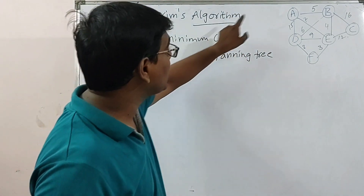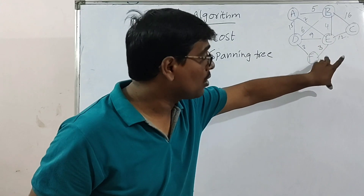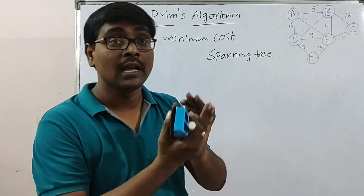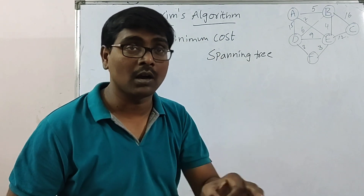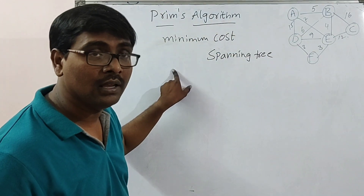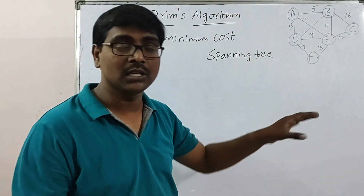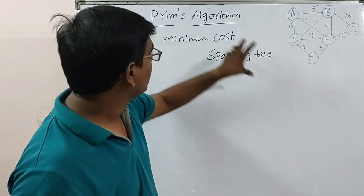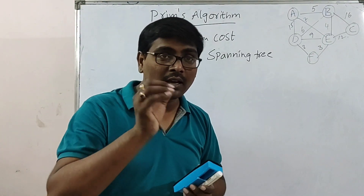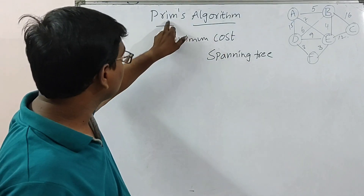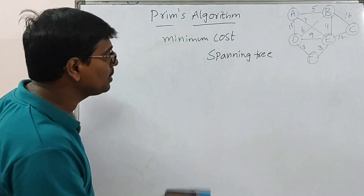Assume the graph is a weighted graph. For this graph also, it is possible to construct many spanning trees. Among all the spanning trees, the tree which has the minimum cost is called the minimum cost spanning tree. It is not possible to derive all possible combinations and find out the minimum — it takes a lot of time. Using a greedy approach, we have Prim's and Kruskal's algorithms. Already in the last session we discussed Kruskal's Algorithm.